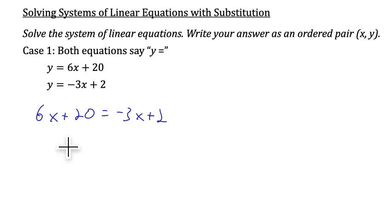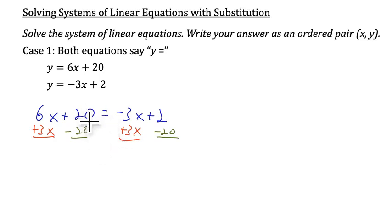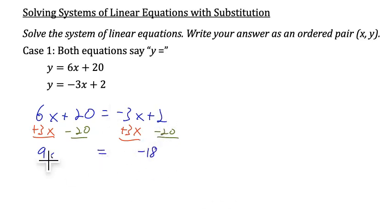We will use inverse operations to solve for x. Notice we went from having two equations with two variables to one equation with one variable. We start by moving the x's to the left by adding 3x to both sides, and move the constants to the right by subtracting 20 from both sides. That leaves us with 9x equals negative 18. Dividing both sides by 9, we get x equals negative 2.